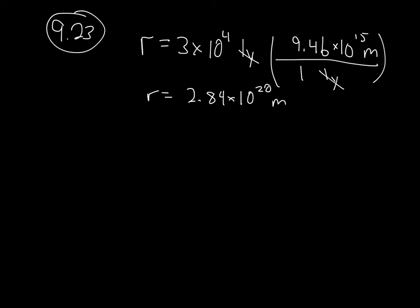That's a pretty big distance. What they want us to do is calculate the period of the orbital motion and calculate the orbital speed of the sun. We need to do this by noting that the mass of our galaxy, which we'll call mass of galaxy, is equal to 4 times 10 to the 41 kilograms. These are large numbers because we're working with astronomically large objects.